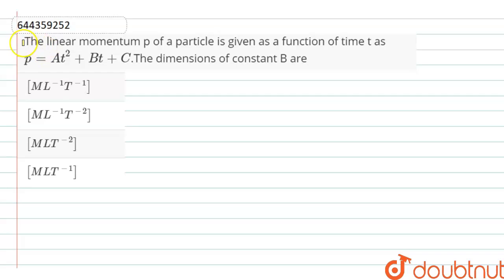Download Doubtnut app today. Hello dear students, here the question is: the linear momentum p of a particle is given as a function of time t as p equals to at square plus bt plus c. The dimensions of b are...